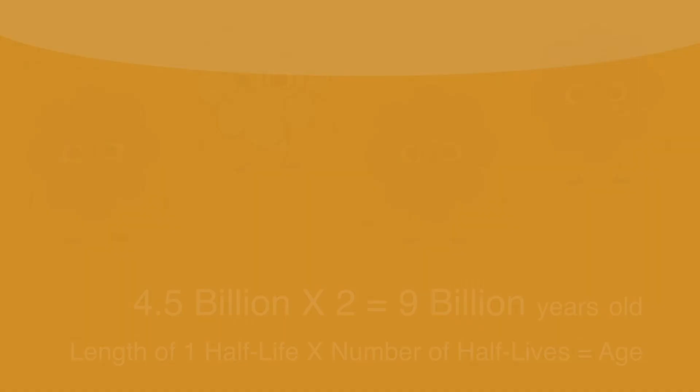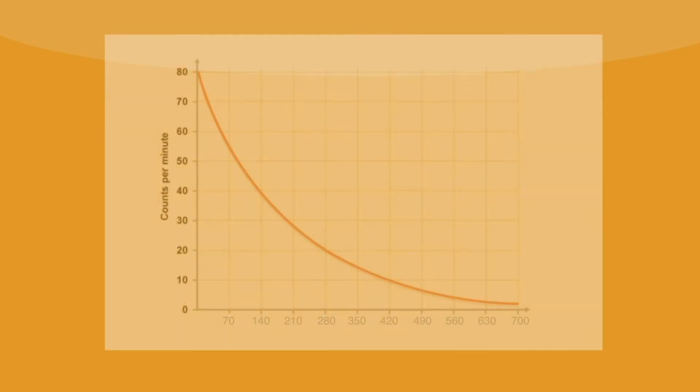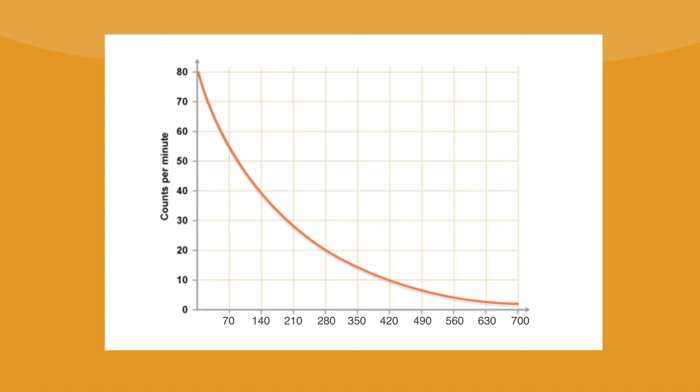Another way you may see this question is you may be given a graph like the one on the screen and be told what the count rate is now. In this case, it's as easy as reading off the graph to find the age. For example, here it might be 20 counts per minute. So if you just read that off, read down, you find the age is 280 years. And that's how easy radioactive dating is.